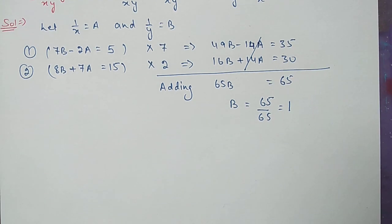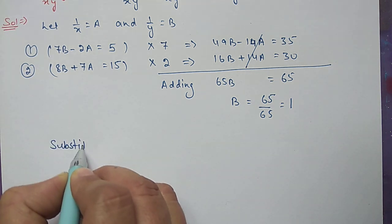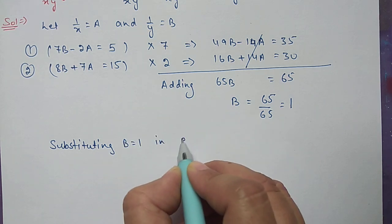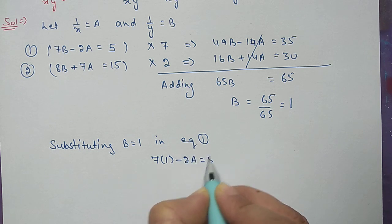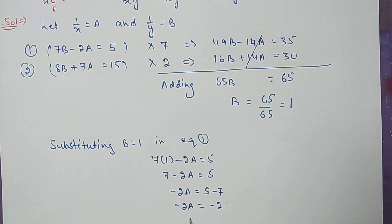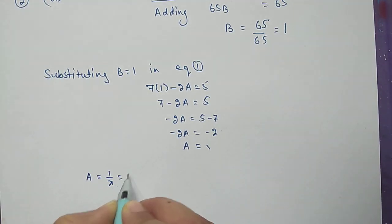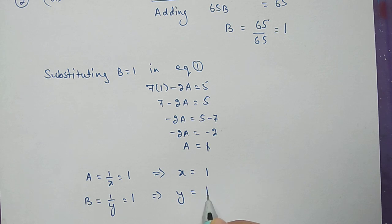Substituting b equal to 1 into equation 1: 7 times 1 minus 2a equal to 5, so 7 minus 2a equal to 5, giving minus 2a equal to 5 minus 7, so minus 2a equal to minus 2, and a equal to 1. Since a equals 1/x equals 1, x equals 1. Since b equals 1/y equals 1, y equals 1.